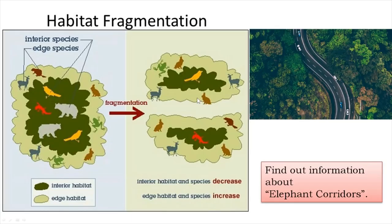One example of habitat fragmentation is the building of roads or highways through a forest. If there is a large, biodiversity-rich forest and the government decides to make a road in the middle of that forest, this can have a negative impact on the biodiversity of the forest. Lots of animals get killed in road accidents. Even a railway line can badly affect organisms living in that particular forest.